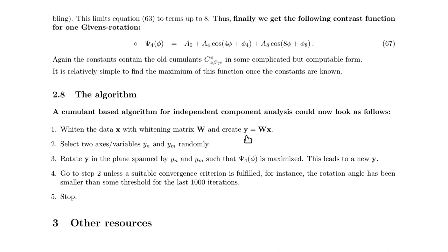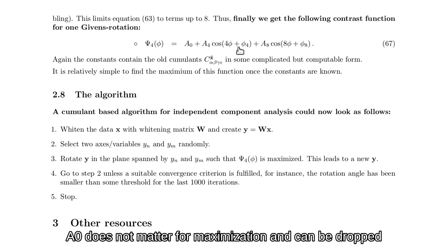Then we take two variables, two components, so n and m. We write down the Givens rotation in these two components and calculate these five constants. And then we optimize the angle with this equation.